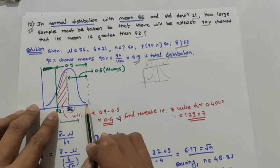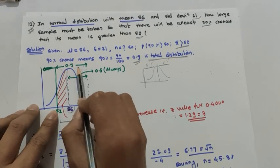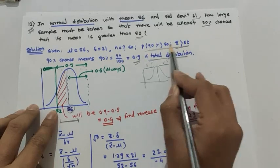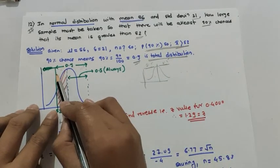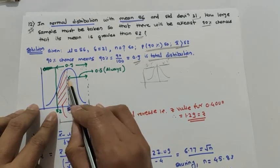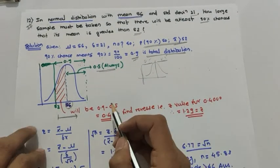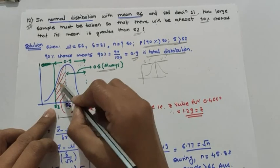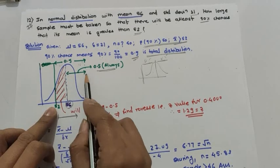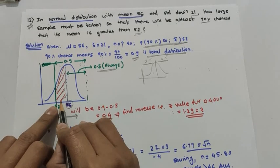From 52 onwards the total value is 0.9. The half portion is always 0.5. So the value for the red shaded portion — from the mean 56 to 52 — will be 0.9 minus 0.5, which gives 0.4. So we have to find z for 0.4 in the z-table.